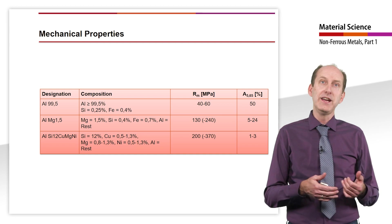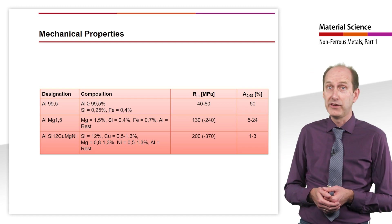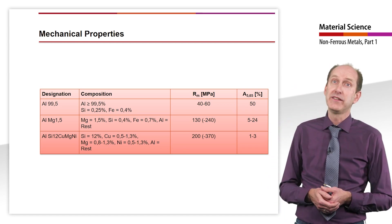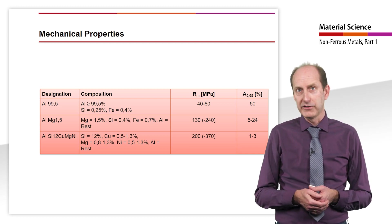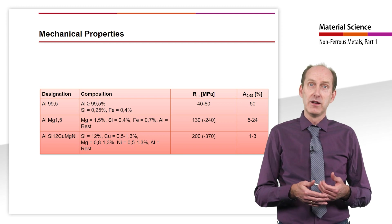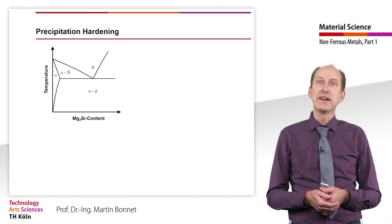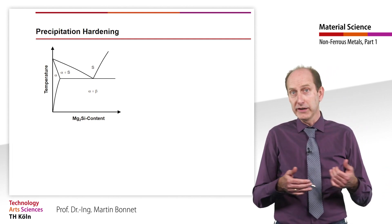In the case of age-hardenable alloys such as the casting alloy AlSi12CuMgNi, the tensile strength can be raised to a value of over 300 MPa by precipitation hardening and thus brought into the region of steel. But how does the hardening of aluminum take place and what is the prerequisite?